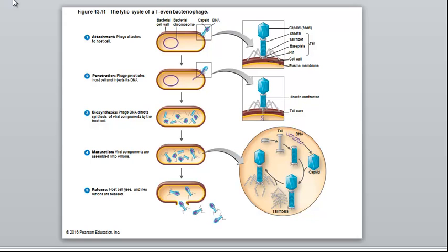If the phage has tail and tail fibers, those are made last. A very important thing—the damage to the host cell wall is fixed as well.